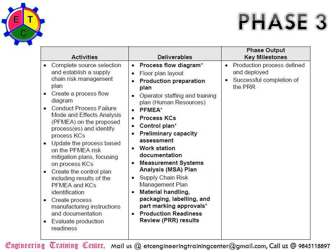The deliverables include the process flow diagram, floor plan layout showing how production is going to be done — what new machines are coming in place, how the production phases are broken down, and where production happens. You will also have the production preparation plan, operator staffing and training plan covering how you develop the competency required to meet the manufacturing instructions and process documentation, and the PFMEA. Other deliverables include process key characteristics, control plan, preliminary capacity assessment, workstation documentation, and Measurement System Analysis (MSA) plan.